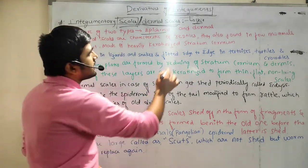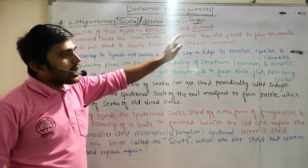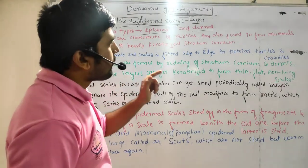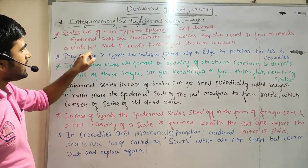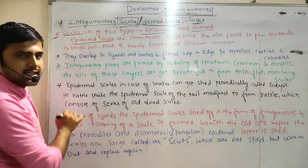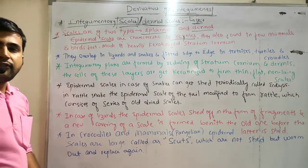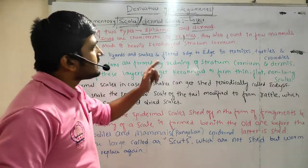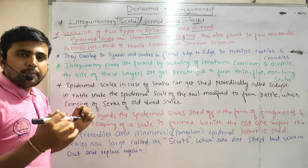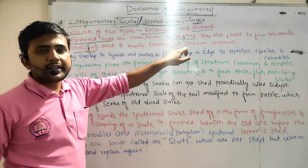One is epidermal and the second one is dermal. So the scales get derived from the epidermal layer and also from the dermal layer. Epidermal scales are characteristics of reptiles. They are also found in few mammals and in birds' feet, and are made of heavily keratinized stratum corneum.